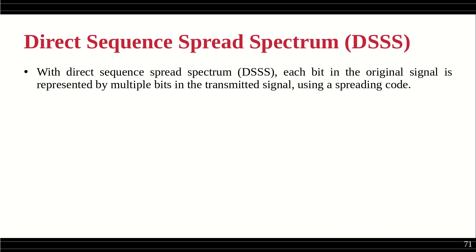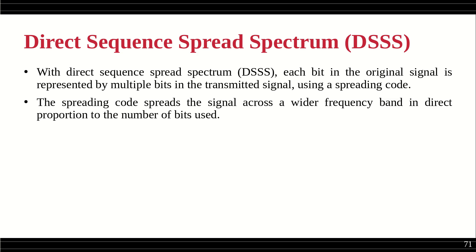We generate the spreading code using a pseudo-random number generator, and using this spreading code, each bit will be spread into a number of bits. The spreading code spreads the signal across a wider frequency band in direct proportion to the number of bits used — meaning a single bit is now represented by more bits.